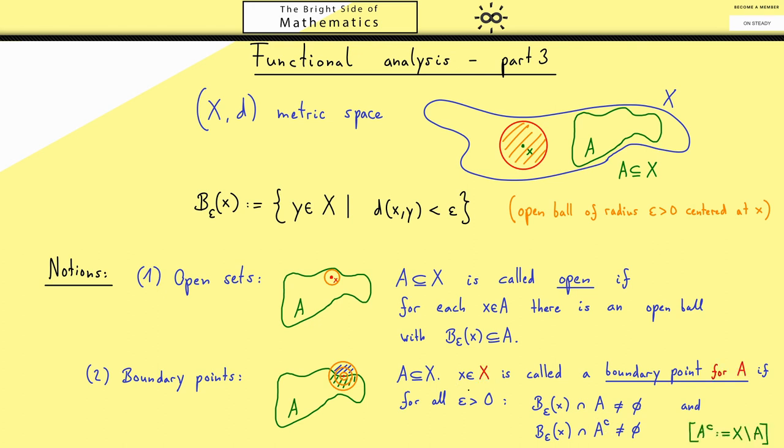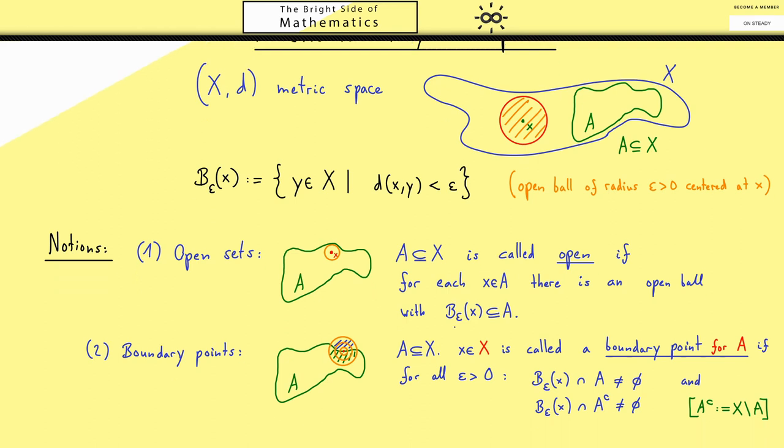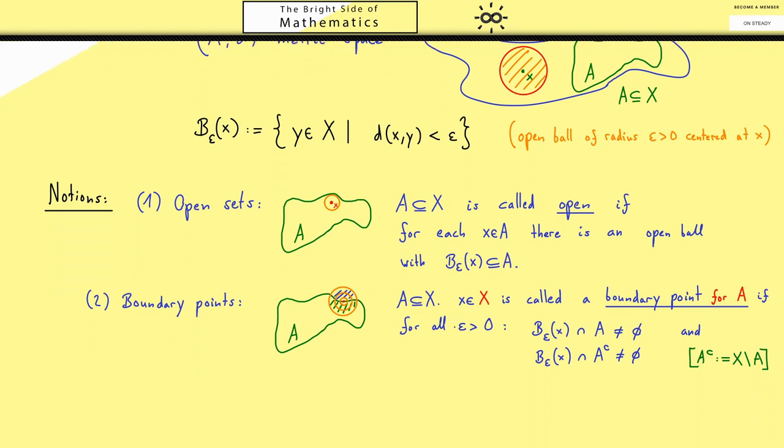There are some important things I should point out here. First a boundary point can be inside a set A or outside. And secondly the notion boundary point makes only sense with respect to a given subset A. There is a symbol to denote all the boundary points which is used very often. It's this curve del in front of A. So we put all the points x that are boundary points for A into this set.